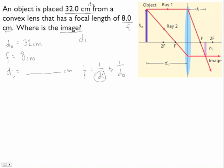Because this formula has a lot of fractions in it, the easiest thing to do is just to plug in your numbers. So we have 1 over 8 equals 1 over di plus 1 over 32.